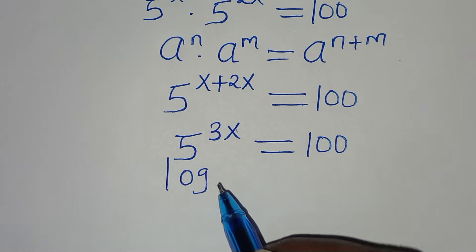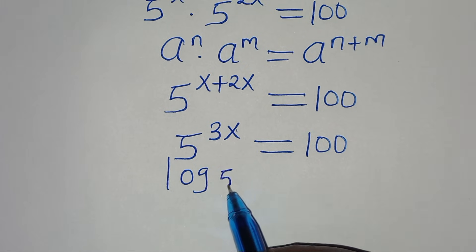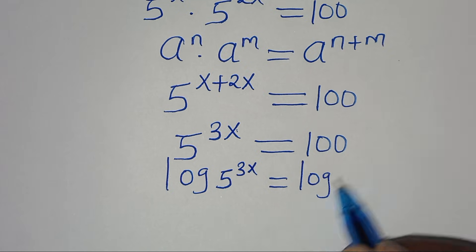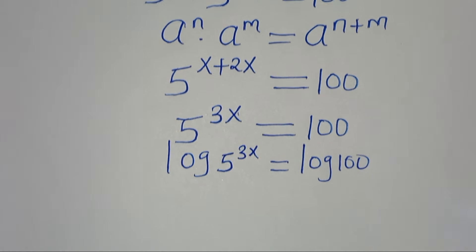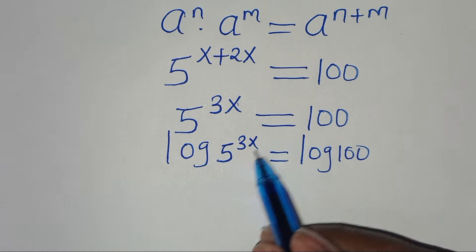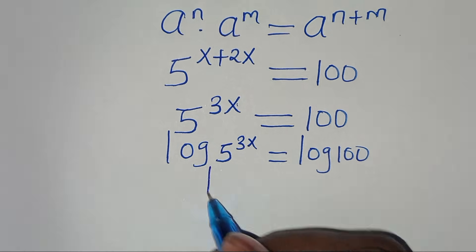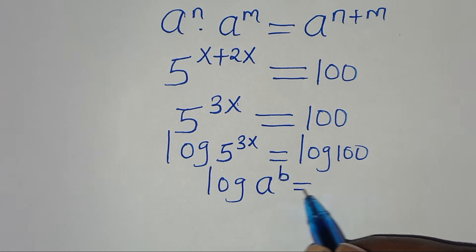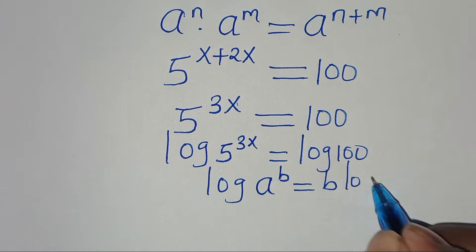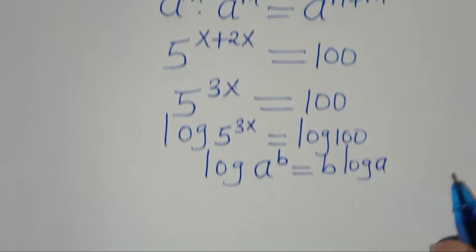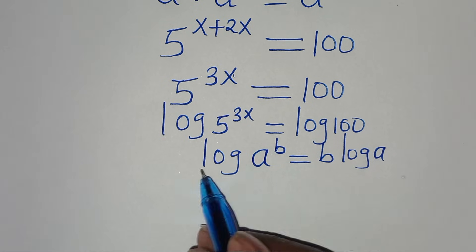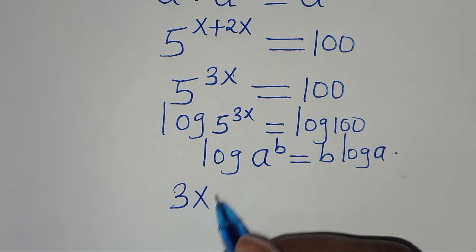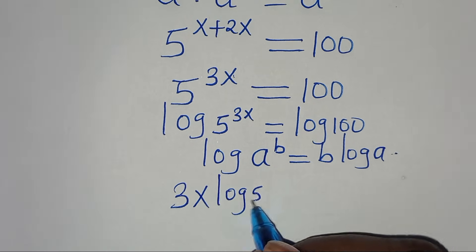To solve for x, we apply logarithms to both sides: log(5^(3x)) = log(100). Using the power property of logarithms — log(a^b) = b·log(a) — we can rewrite the left side.